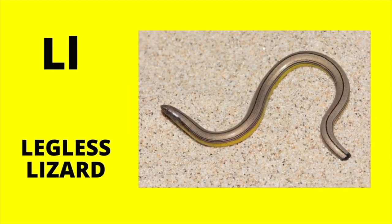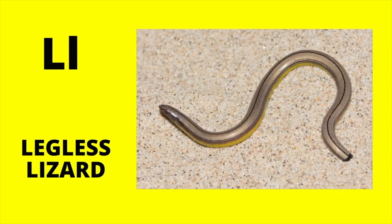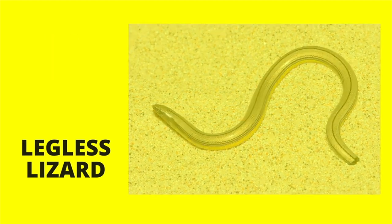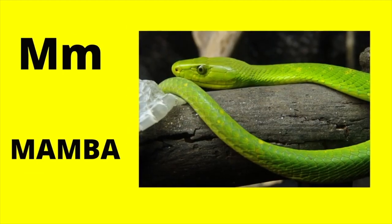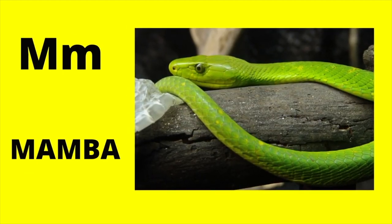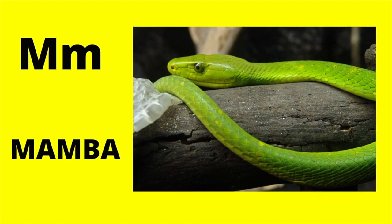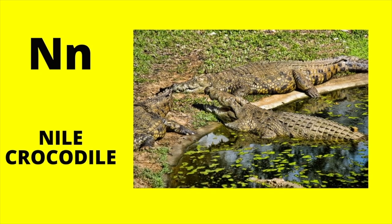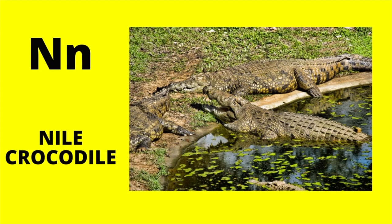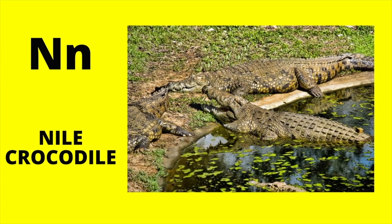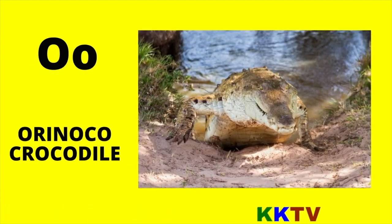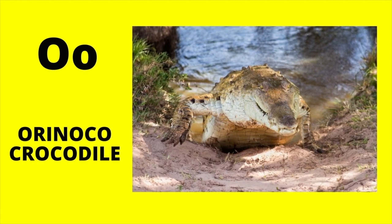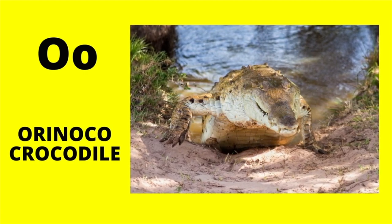L is for Legless Lizard. L, legless lizard. M is for Mamba. M, mamba. N is for Nile Crocodile. N, Nile Crocodile. O is for Orinoco Crocodile. O, Orinoco Crocodile.